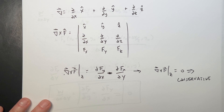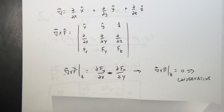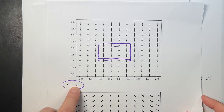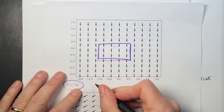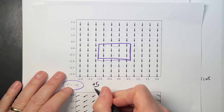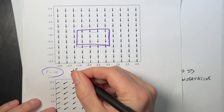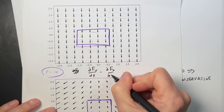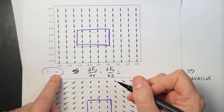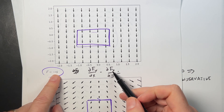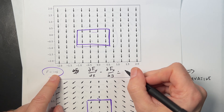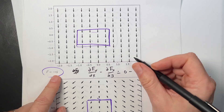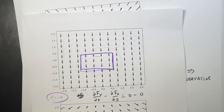Let's apply that to the vector fields. First field: F equals negative c y-hat, so fx is zero. The partial of fy with respect to x minus the partial of fx with respect to y: both are zero — there's no x component, it's a constant. So that's conservative.